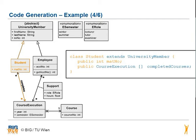The class student has an association to another class. Close to the head of the arrow, through the class course execution, there is the multiplicity star. The translation is public, then the class name course execution typed with multiplicity star, which is translated in brackets, and then the role name. The role name is not given in this example, but you need one in Java, so we take completed courses as the name.